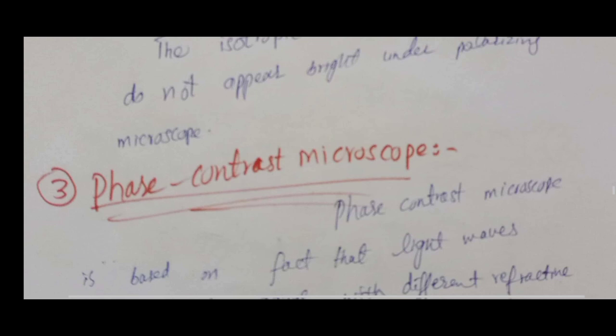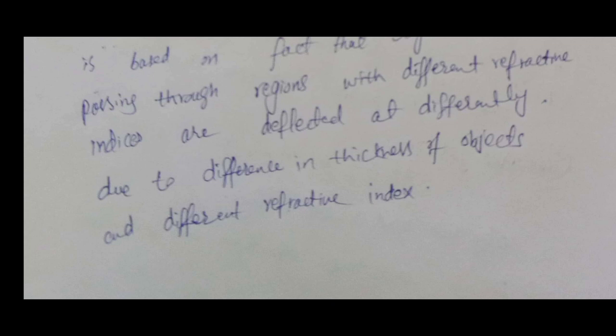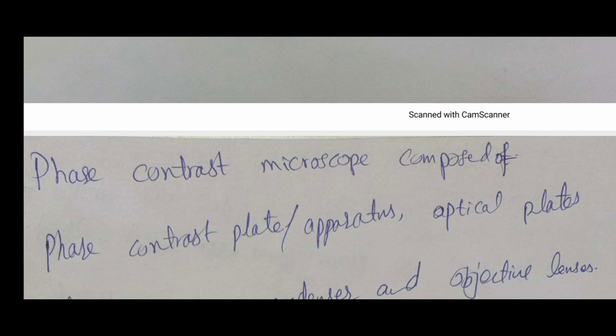The third type of light microscope is the phase contrast microscope. In this microscope, objects are examined based on the light passing through different regions. The light is refracted at different angles and different refractive indices produce differences in the intensity of light, allowing the object length and different refractive index to be visualized.